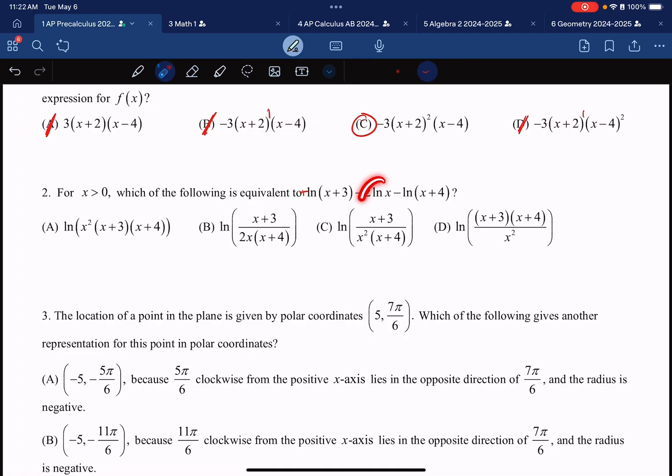In front of this logarithm, we have a negative, and in front of this logarithm, we have a negative. The sign tells you if you're going to live on the top or the bottom of the fraction once we use our properties of exponents.